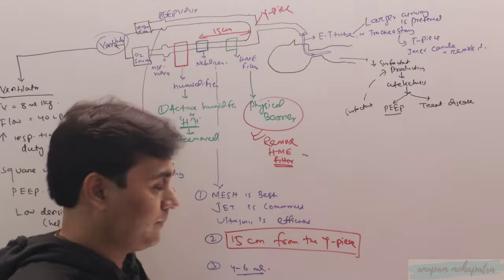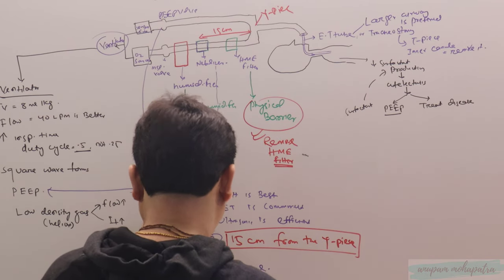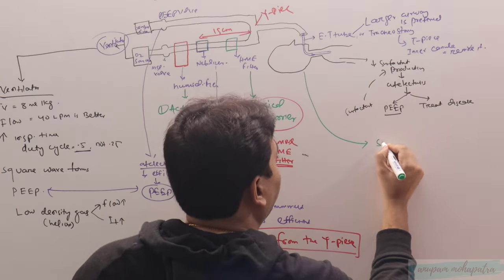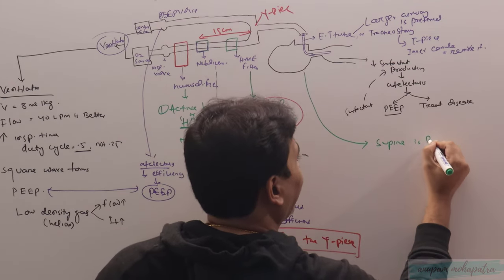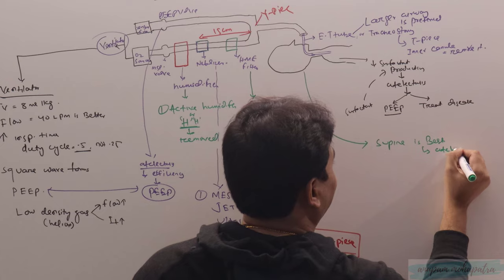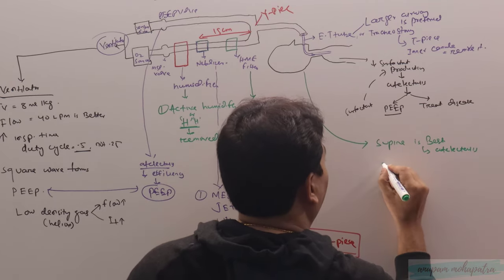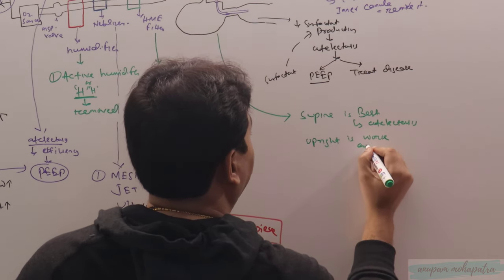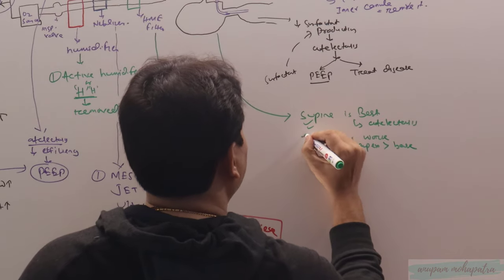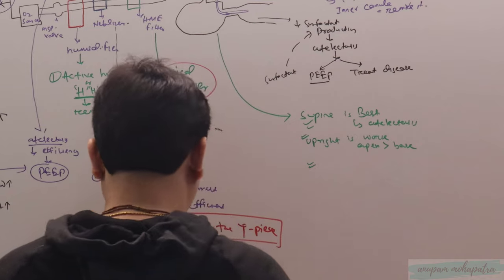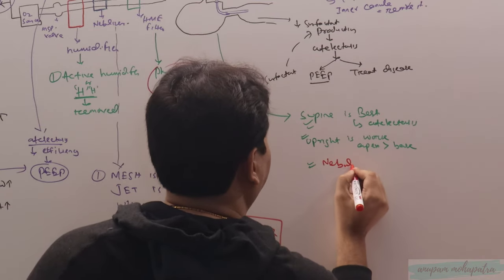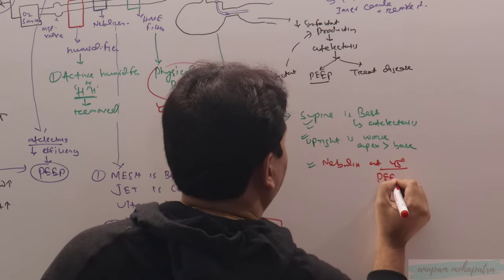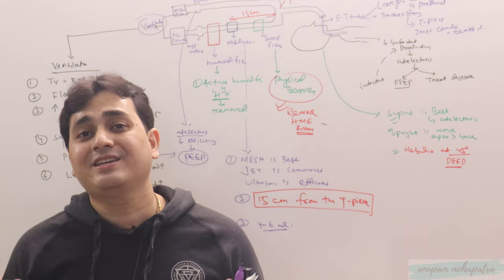What about the patient? Supine is best, but if there is atelectasis, upright is worse for nebulization because the apex gets more than the base. So we have to strike a balance. Whenever you nebulize, you nebulize at 45-degree position with PEEP along with it.